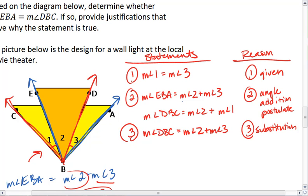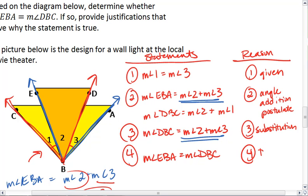Now, I have EBA equal to 2 plus 3, and DBC equal to 2 plus 3. So I can say that the two angles have a measure that is equal to one another. And that is by the transitive property of equality.